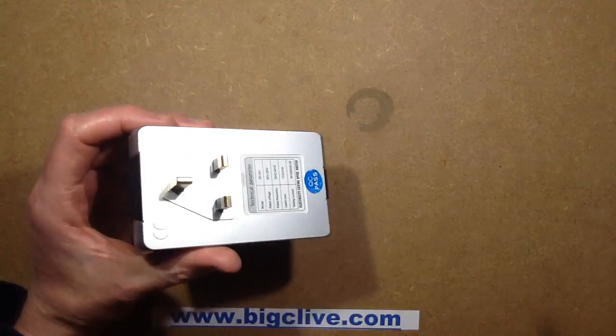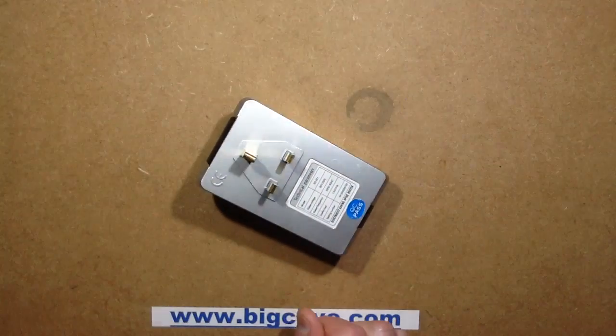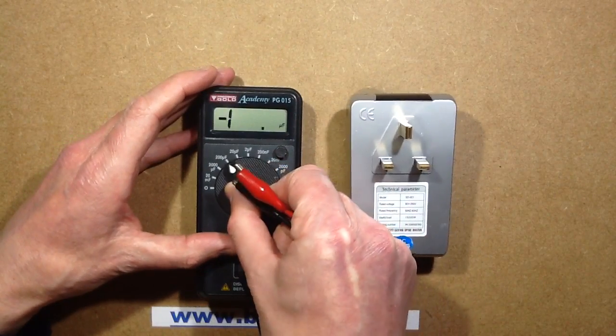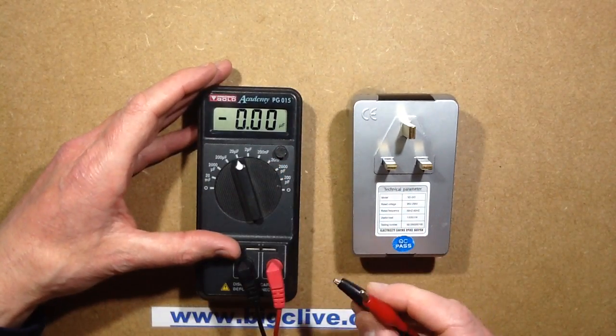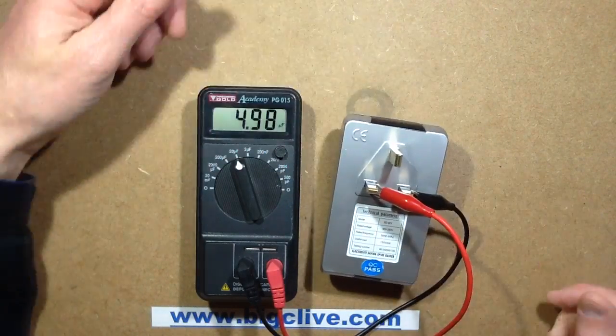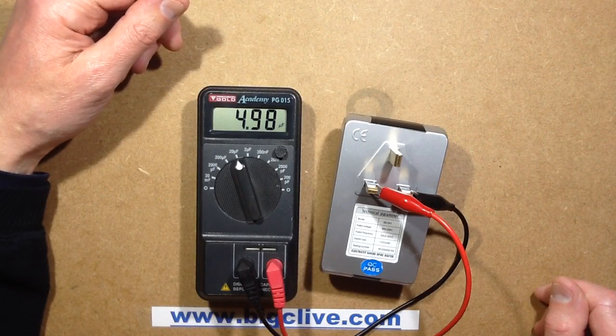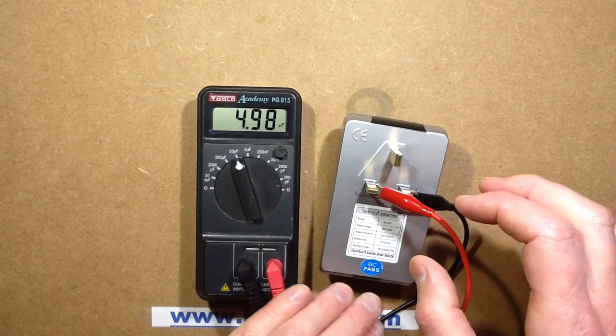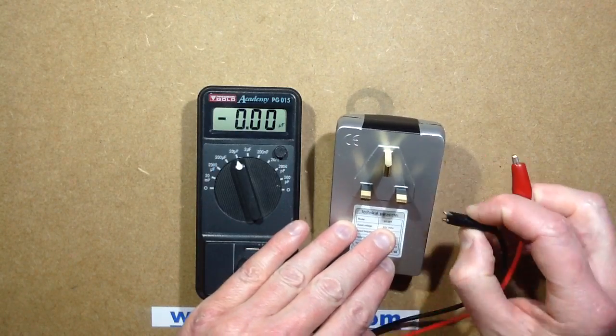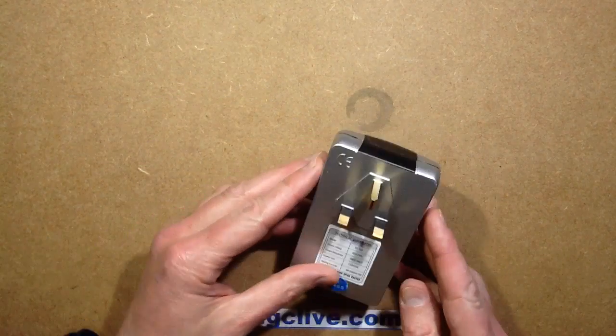Let's see if this one actually has a capacitor connected in it. I'll set this to 20 microfarad rather optimistically. 4.98 microfarad, so the best part of 5 microfarad. I wonder if it's just a standard 4.7 microfarad capacitor or if it is actually 5 microfarad. That's quite high. They may actually be trying to do power factor correction here. That's kind of intriguing.